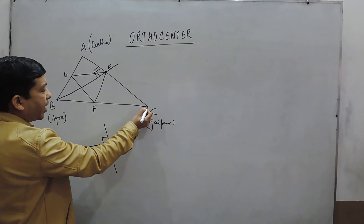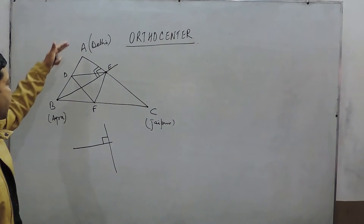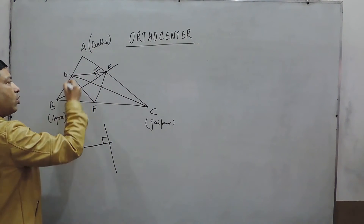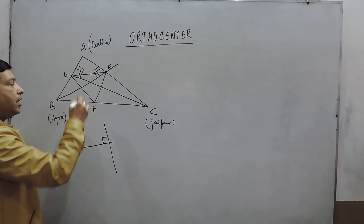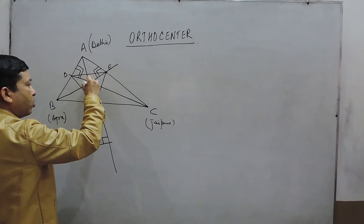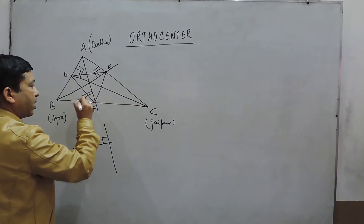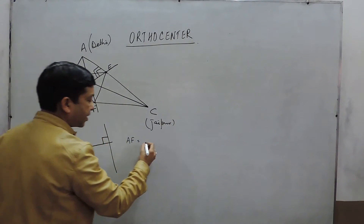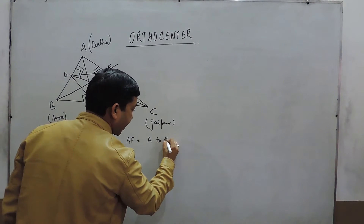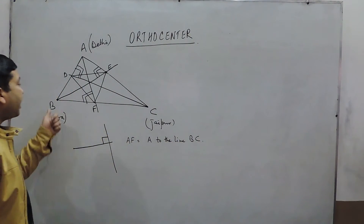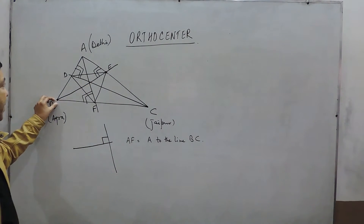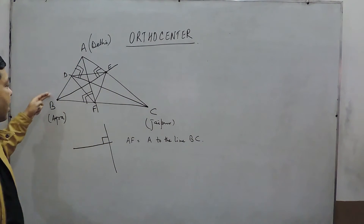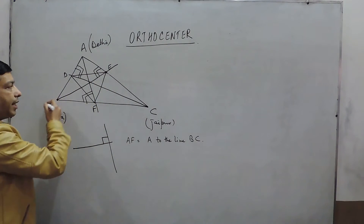Same way, if from point C we want to see the lowest distance to line AB, it is the perpendicular distance from C to AB. This is also perpendicular. Same way, going from A to F, this is also perpendicular. So I can say that AF is the shortest distance from point A to line BC, and BE is the shortest distance from point B to line AC. Same way, CD is the shortest distance from point C to line AB.